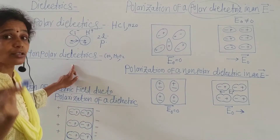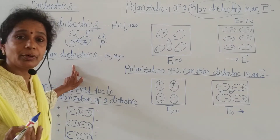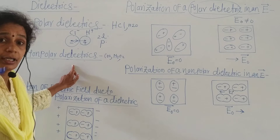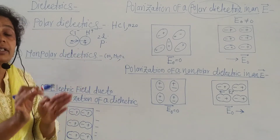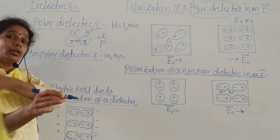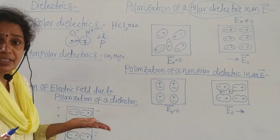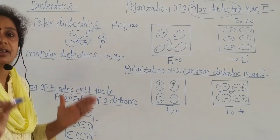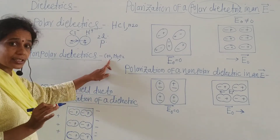Now the second type is non-polar dielectrics. In non-polar dielectrics, the center of the positive charge coincides with the center of the negative charge. Therefore, they do not possess any dipole moment, due to the symmetrical shape of the molecule. An example is CO₂.